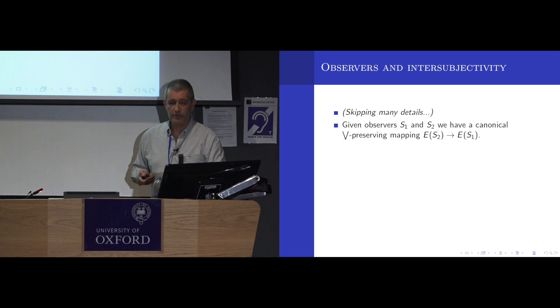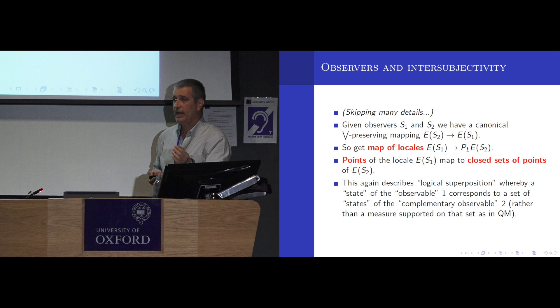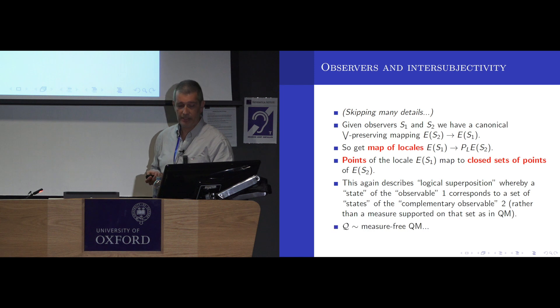Now, there's canonical ways to compare different observers. There are mappings between them, which topologically means that the points of a locale get mapped to closed sets of points of another locale. It's like a change of basis. When you have different bases of a linear space, the basis vector is a linear combination of other basis vectors. Here, again, the linear combination is just a zero, has coefficients 0 and 1. So, each state of observable 1 corresponds to a set of states of the complementary observable 2. Not a measure supported on that set, as you would have in quantum mechanics. So, metaphorically, you can think of Q as a kind of measure-free quantum mechanics. It's just a topological part. Then you had to add the numbers if you wanted to do quantum mechanics.